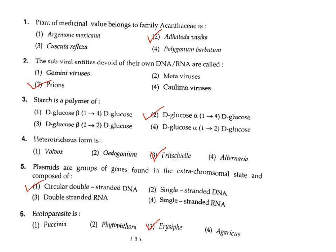Question 4: What is the Heterotrichus form? The Heterotrichus form is found in Fritschiella. Correct answer Option 3. Question 5: Plasmids are a group of genes found in an extra-chromosomal state.